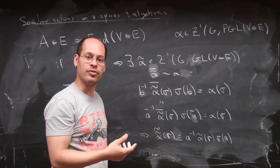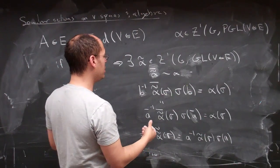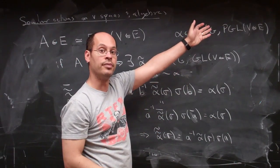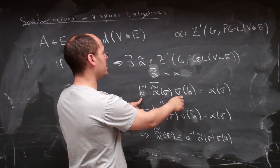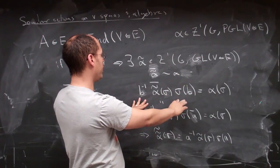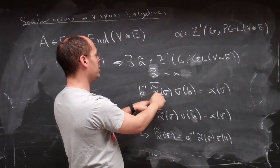But how is co-homologousness defined? What it's defined to mean is that there is some B, so this is co-homologousness as co-cycles in PGL, which means that there should be some B, an element of PGL V tensor E.